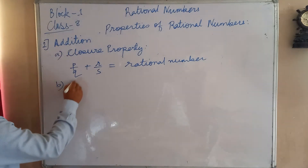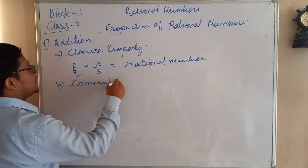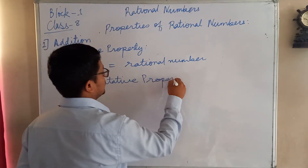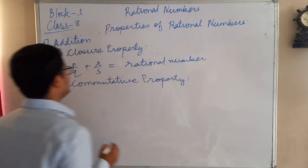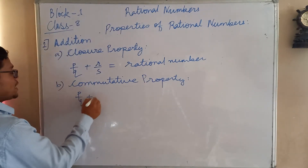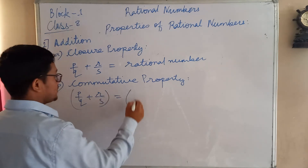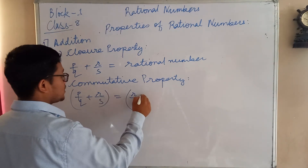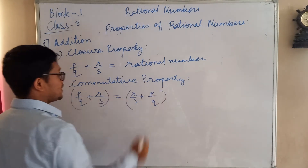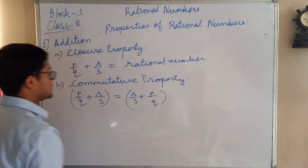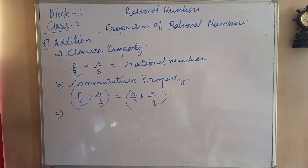The second property is the Commutative Property. In commutative property, if you add rational numbers in this manner or in this manner, the result will always be the same. That means if you interchange the positions and add two different rational numbers, the result on both sides will be the same.